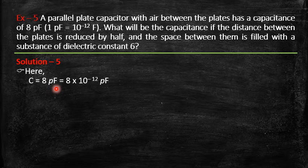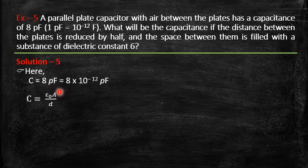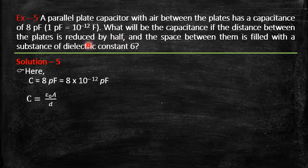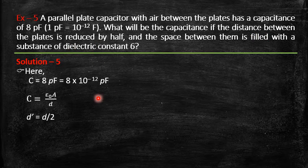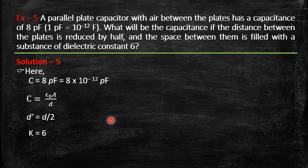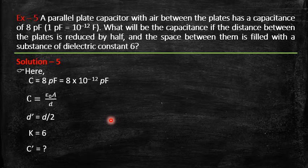Initially, C = ε₀A/d = 8 pF, with no medium between the plates. The new distance is d′ = d/2. The gap is now filled with a medium of dielectric constant k = 6, so the permittivity becomes ε = kε₀. The plate area A remains unchanged. We need to find the new capacitance C′ = εA/d′.